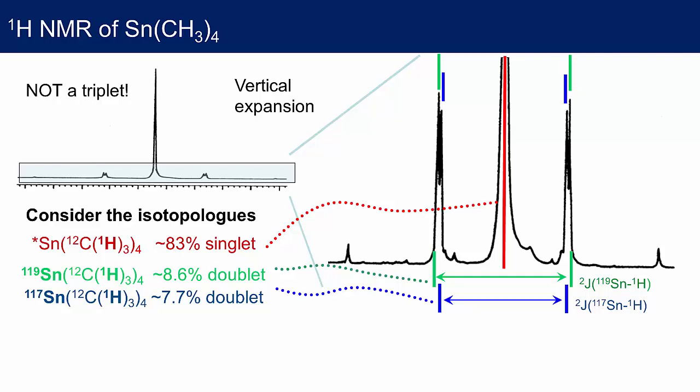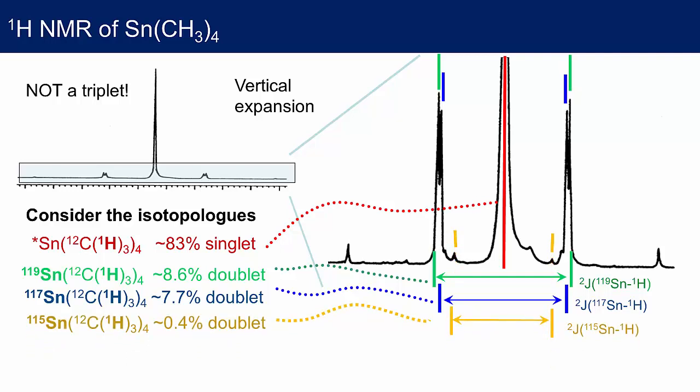There is also an isotopologue with tin-115 at the centre. This is a spin-one-half nucleus and will split the proton signal into a doublet, but this species is quite rare. Based upon the experimental integrated intensities, we can assign these peaks to small satellite peaks in yellow. The separation of these two lines gives the two-bond tin-115 to proton coupling constant. So far, we have accounted for most, but not all, of the features.